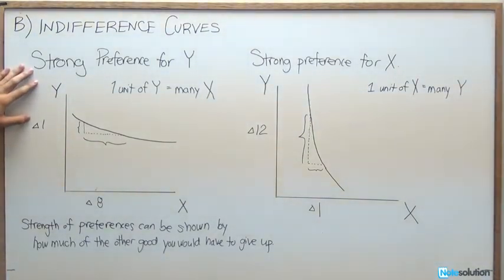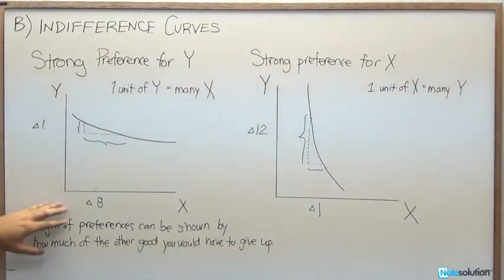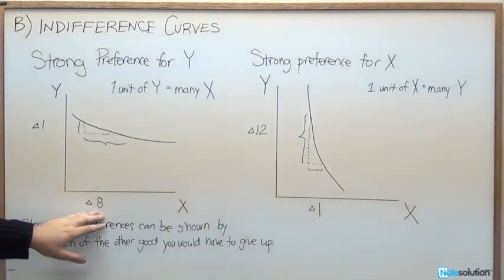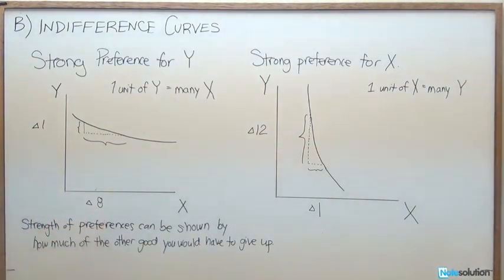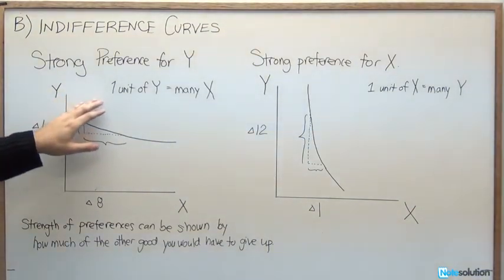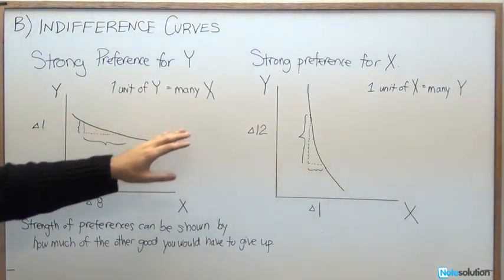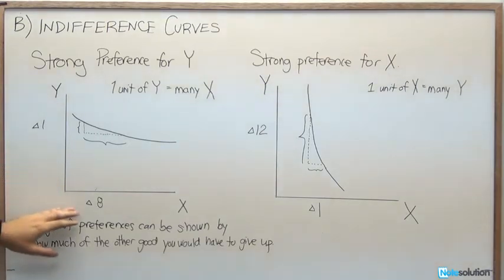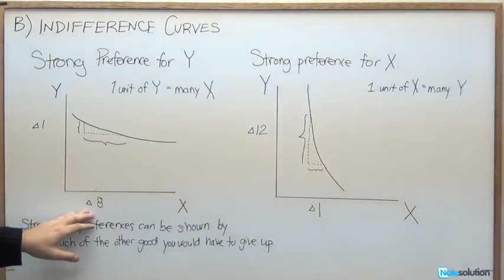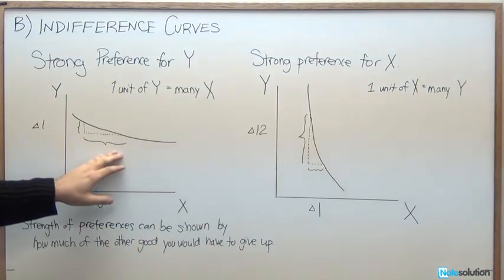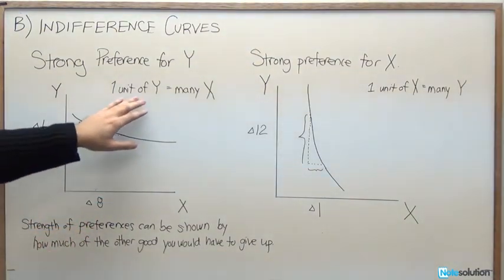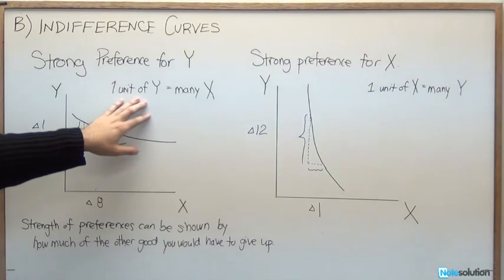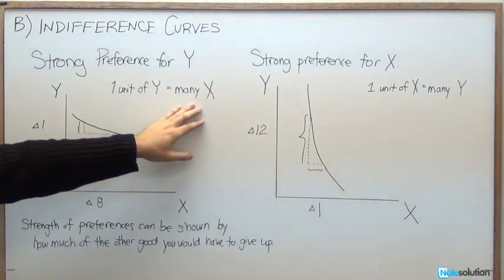So what exactly are strong preferences? One unit of one good is essentially equal to some number of the other good. A strong preference for Y means that one unit of Y equals many X. That is to say, if we give up one unit of Y, we would need many units of good X to give us the same value. Units of Y are particularly valuable for us—they're worth many units of another good.